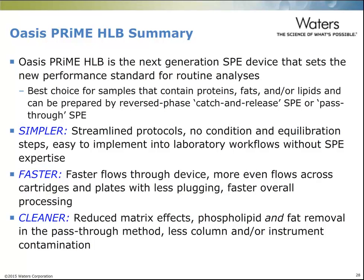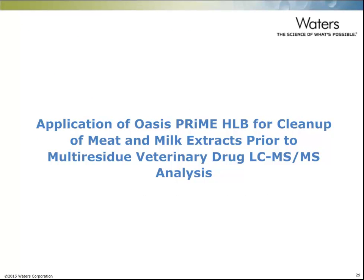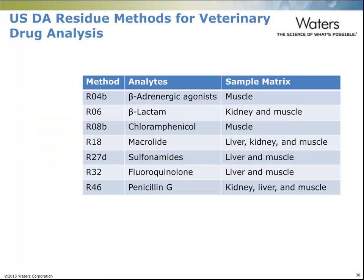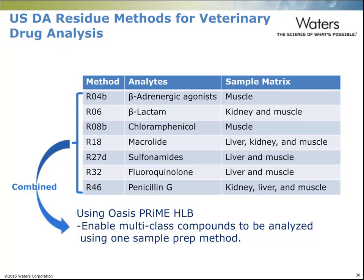Here are some application examples. For veterinary drug residue analysis, as exemplified by USDA methods, there are seven different single-class methods. Each class is analyzed using separate methods — that means seven separate sample preps and seven separate LC-MS analyses. By using Oasis Prime HLB, we can combine all seven analyses into one single prep and one LC-MS analysis.